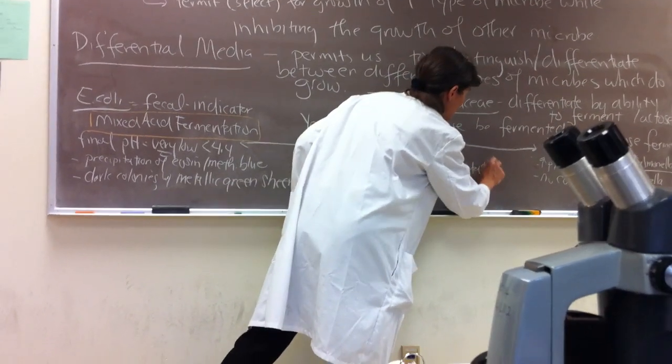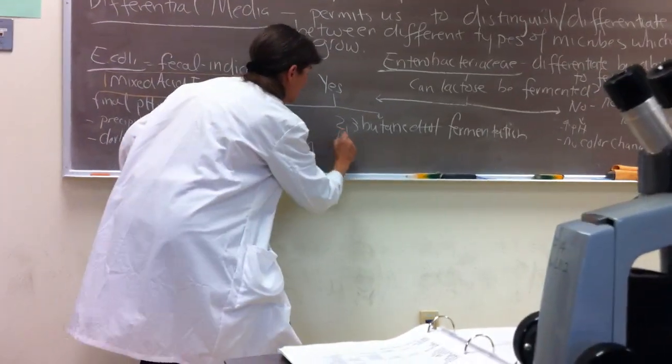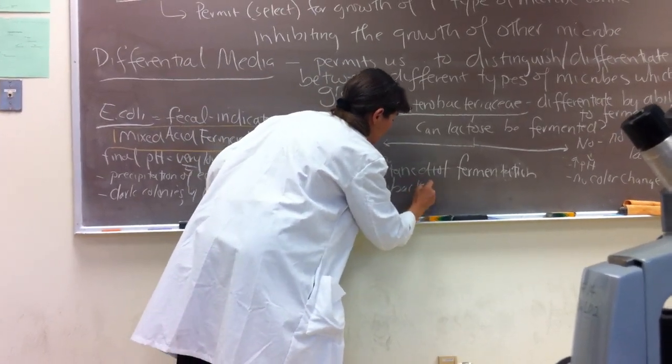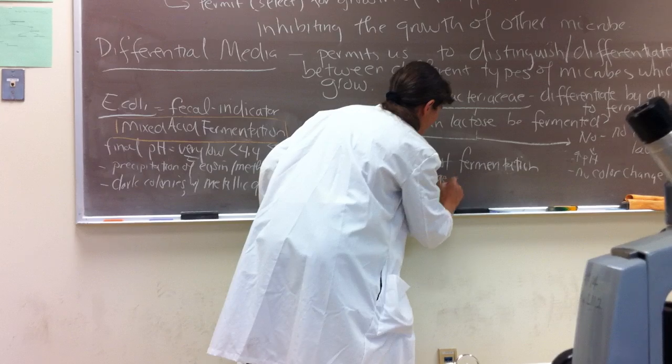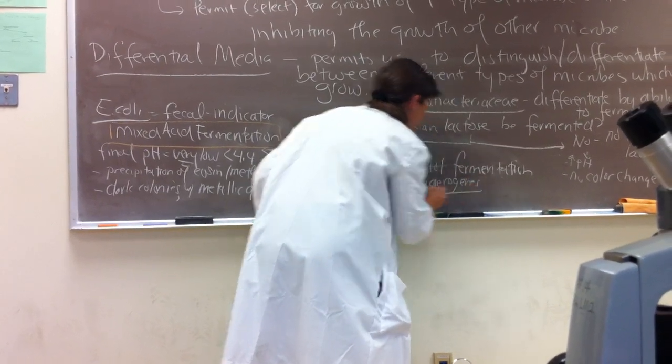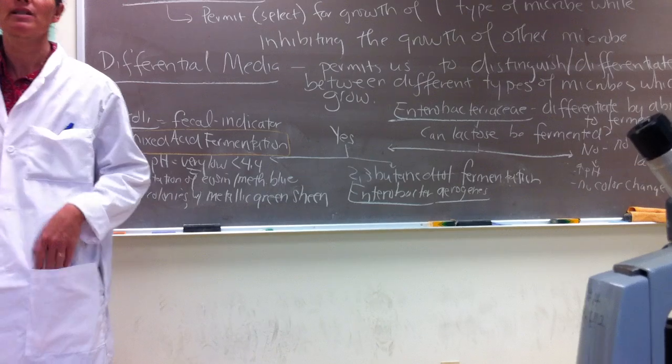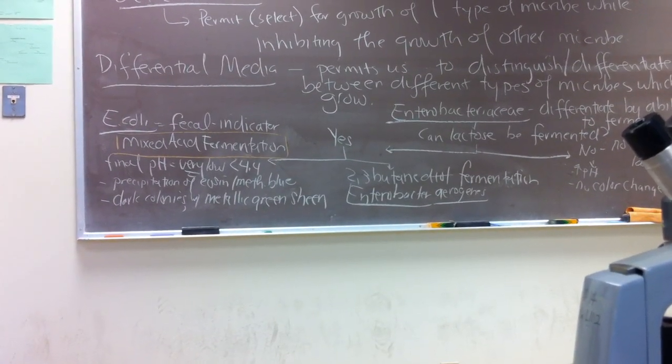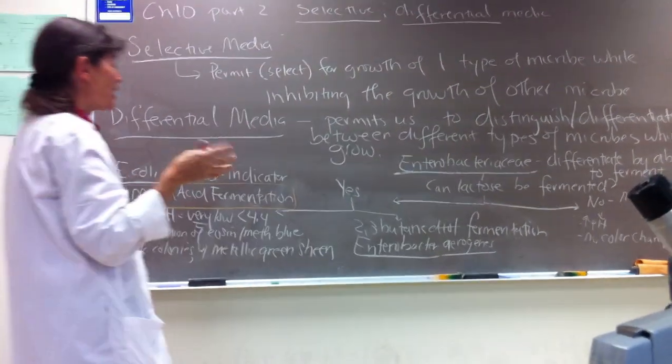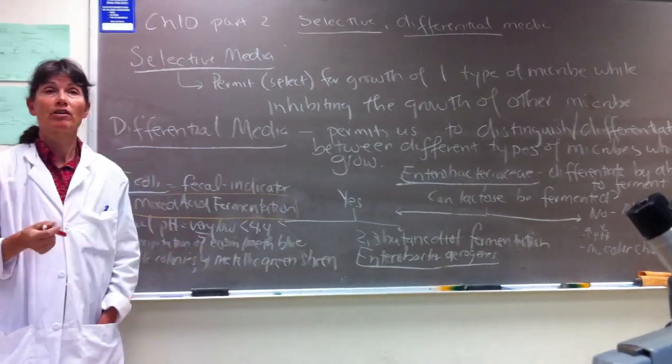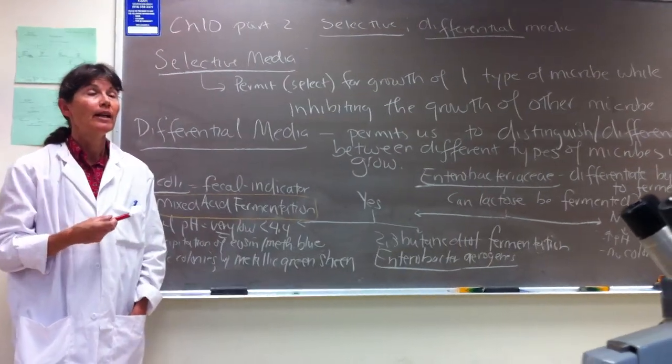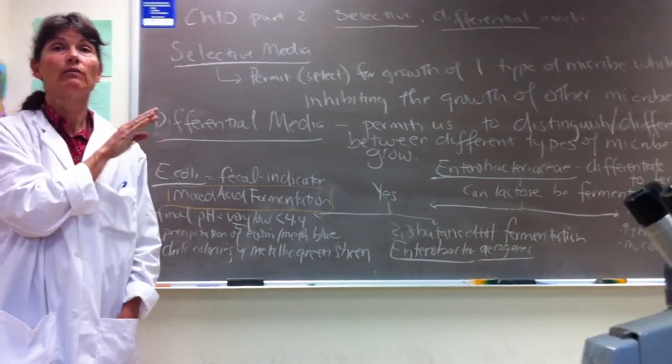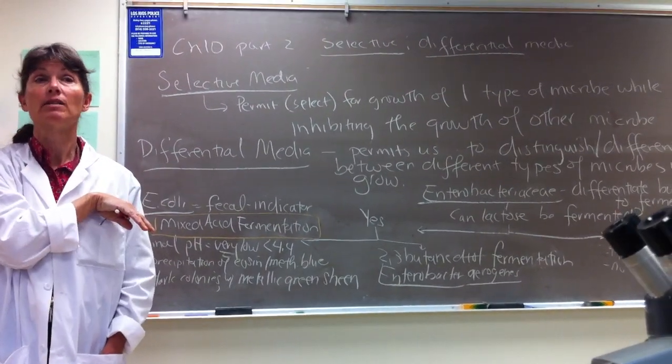Butanediol fermentation is used by E. coli's close cousin called Enterobacter aerogenes. Now it's very hard to distinguish Enterobacter aerogenes from E. coli. They look the same in a gram stain, they have many similar properties, they both ferment lactose. But the natural habitat of Enterobacter aerogenes differs from E. coli. Enterobacter aerogenes can be found in the intestinal tract, but it can also survive well in decaying organic material.